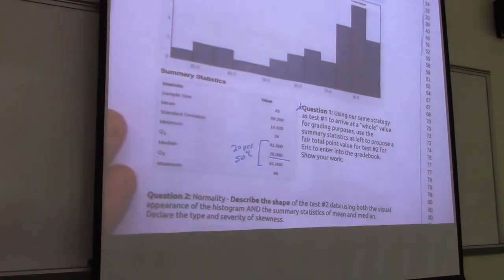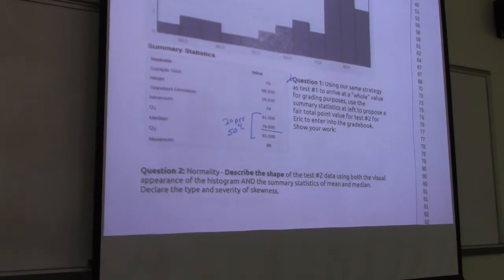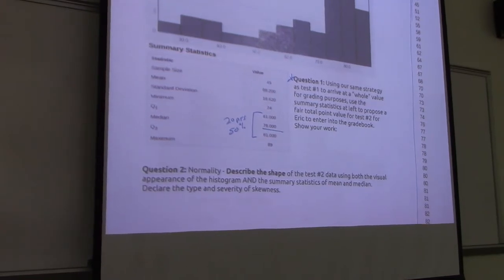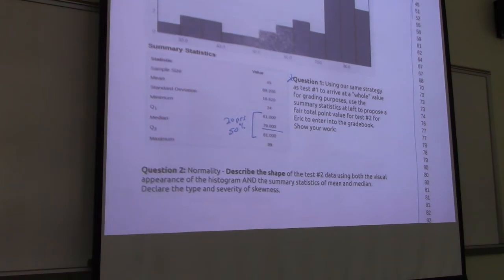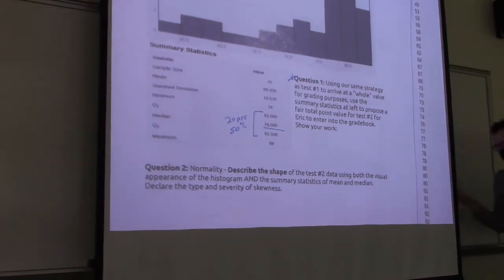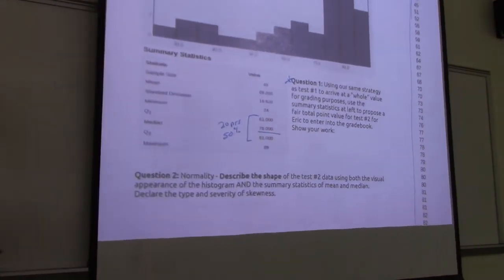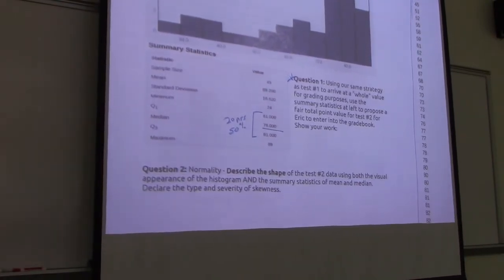So based on what we did last test, I'm going to invite you to work alone or with people around you to tackle question number one. Using our same strategy as test number one to arrive at a whole value for grading purposes, use the summary statistics at left to propose a fair total point value for test number two for Erica to enter into the gradebook. Alright, this is your big chance. So what percent did you get? Well, this is your chance to figure out what would be fair. What was our approach we used last time? We said, let's take the median and make it what? I think we said median at 80%.